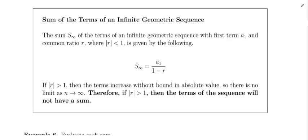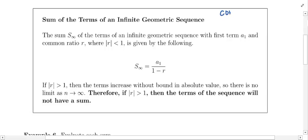If you are dealing with an infinite geometric series, it may or may not converge. You absolutely have to know the conditions under which an infinite geometric series converges. It is going to converge if the absolute value of R is less than 1. It is going to diverge if the absolute value of R is bigger than 1. Make sure you know that.